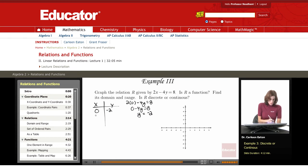When x is 2, 2 times 2 minus 4y equals 8. That's 4 minus 4y equals 8. That's negative 4y equals 4, y equals negative 1.